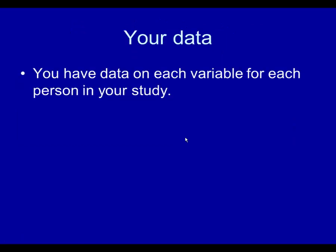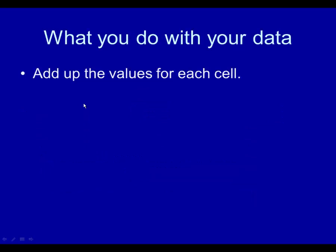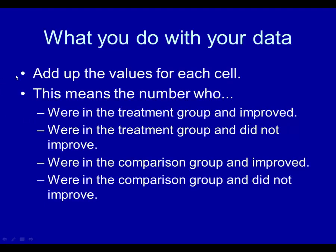You have data on each variable for each person in your study. For example, person number one was in the treatment group and improved — yes. Person two was in the treatment group and also improved — yes. Person three was in the comparison group and also improved — yes. Person four was in the comparison group and did not improve — no. You add up the values in each cell: the number in the treatment group who improved, the number who did not, the number in the comparison group who improved, and those who did not. You need these four numbers to use the file.